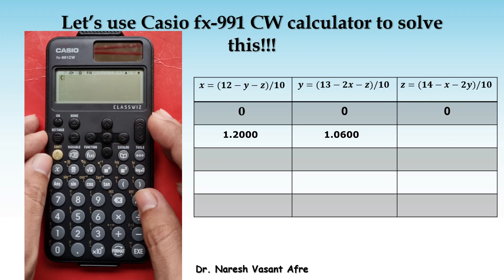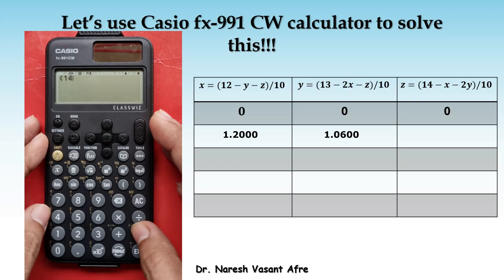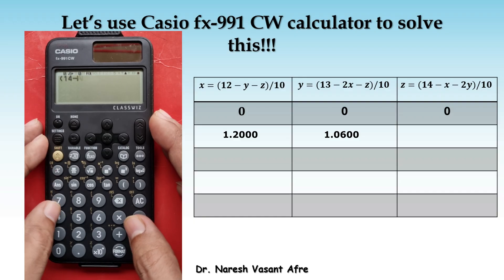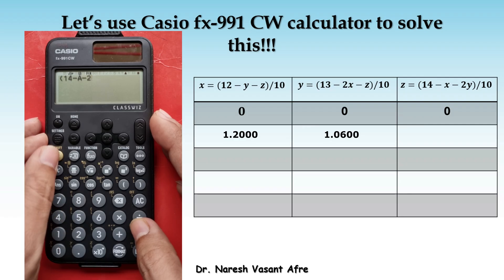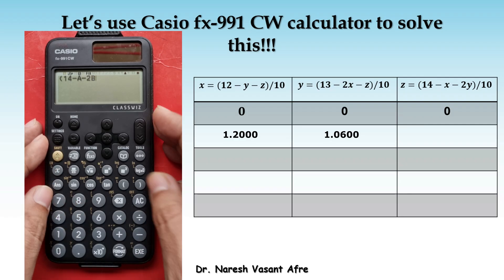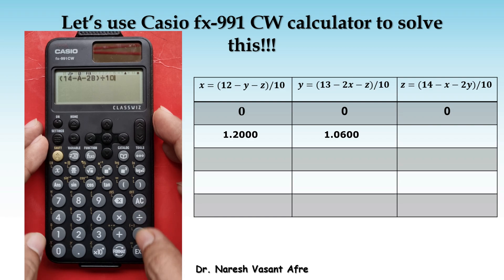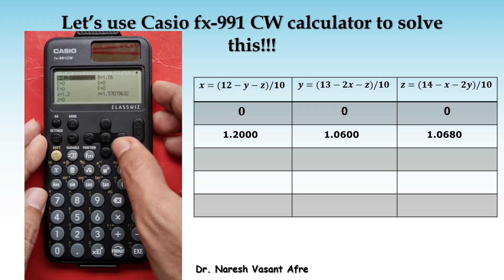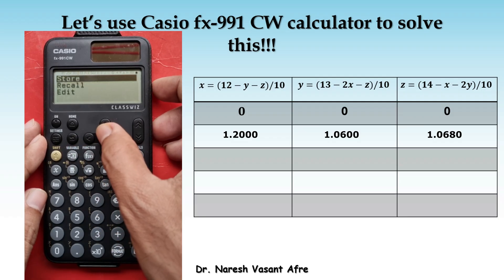Next, we compute the value of Z that is 14 minus X that is A minus 2Y that is 2B. Dividing this by 10 gives you the updated value of Z and that is 1.0680. We are going to store this updated value in C again.